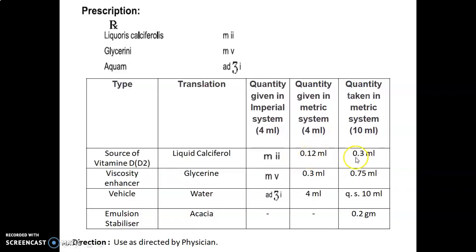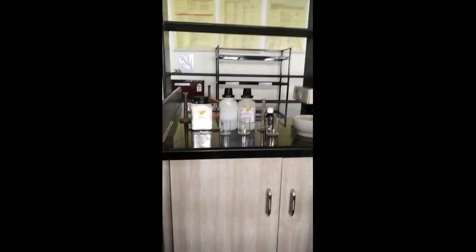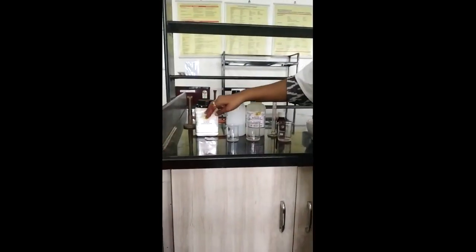Glycerin, used as a viscosity enhancer — 5 minims (0.3 ml), quantity taken 0.75 ml. Water, used as a vehicle — add to 4 ml, quantity taken: quantity sufficient to prepare up to 10 ml. Acacia, used as an emulsion stabilizer — quantity sufficient, quantity taken 0.2 g. Direction: use as directed by physician.